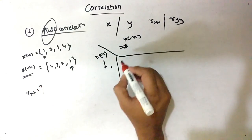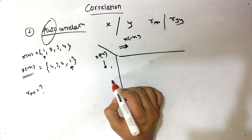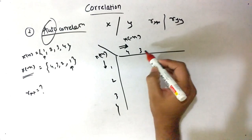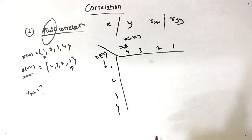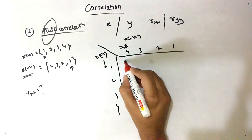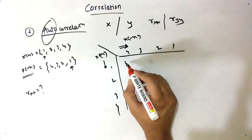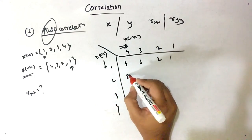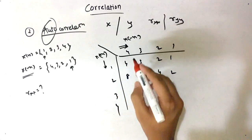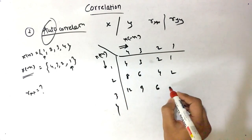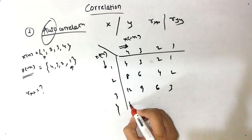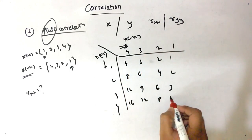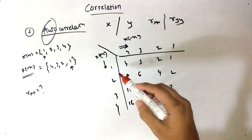So let's find R_XX. In the positive direction we have 1, 2, 3, 4. In the X(-n) direction we have 4, 3, 2, 1. Now let's solve: 1 into 4 is 4, 1 into 3 is 3, and so on. For row 2: 2 times 4 is 8, then 6, then 4, then 2. For row 3: 12, 9, 6, 3. For row 4: 16, 12, 8, 4. Then we follow the cross diagonal fashion and add them up.